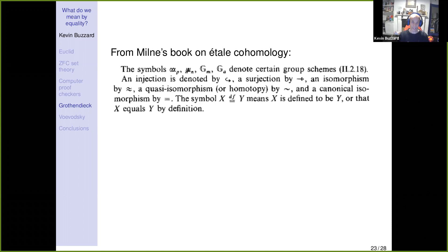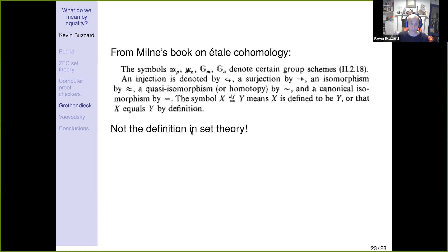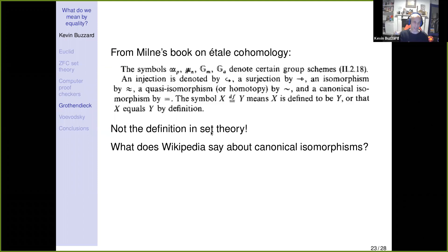This started in the 1970s. Milne's book on étale cohomology, which is where I learned étale cohomology, adopts in its conventions the phrase 'canonical isomorphism,' now embedded in the culture. The canonical isomorphism is denoted by equality, so every time you see 'equals' in that book it might not mean the sets are equal — it might mean the sets are canonically isomorphic. So it becomes really important to figure out what canonical isomorphism is. Let's look it up on Wikipedia.